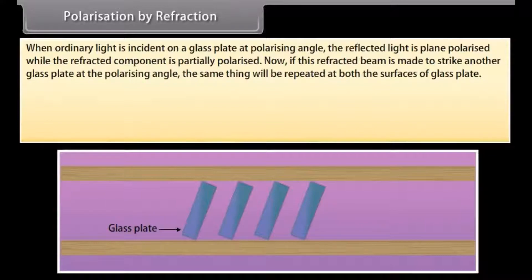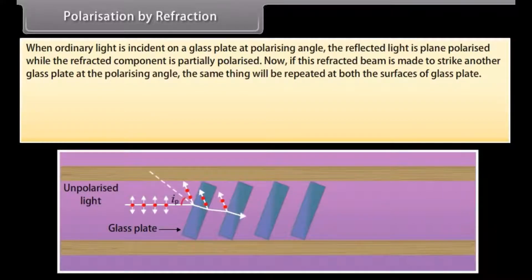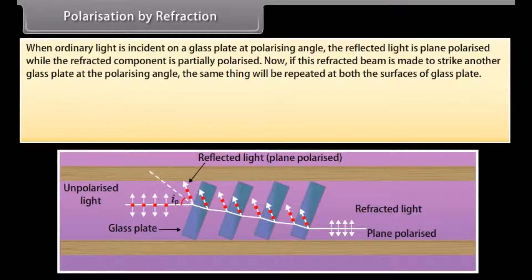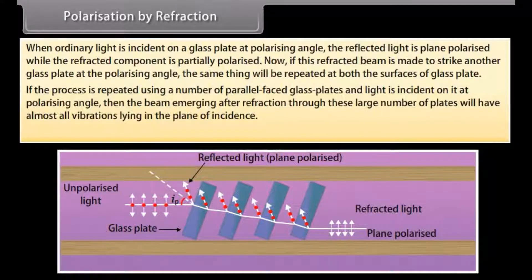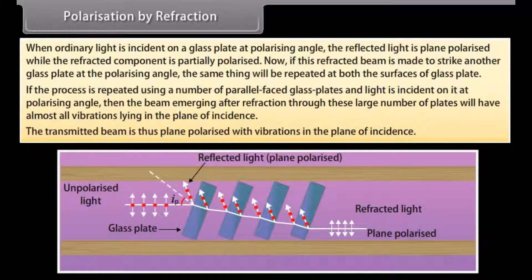When ordinary light is incident on a glass plate at the polarizing angle, the reflected light is plane polarized while the refracted component is partially polarized. If this refracted beam strikes another glass plate at the polarizing angle, the same effect repeats. If the process is repeated using a number of parallel glass plates and light is incident at the polarizing angle, the beam emerging after refraction through these plates will have almost all vibrations lying in the plane of incidence, giving plane polarized transmitted light.